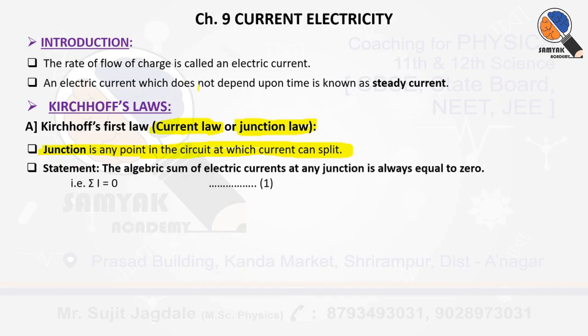So what is the statement of KCL? The algebraic sum of electric currents at any junction is always equal to zero. Mathematically, we can write: summation i equals zero. We are going to refer to this as equation number one.